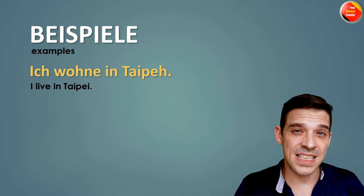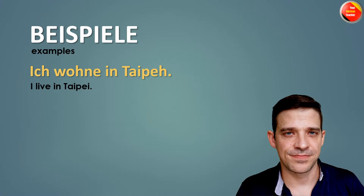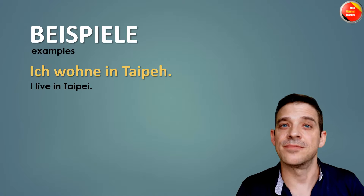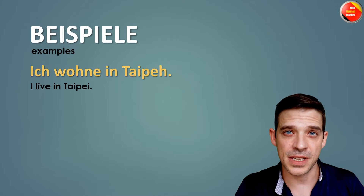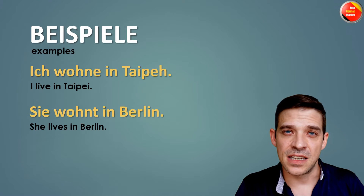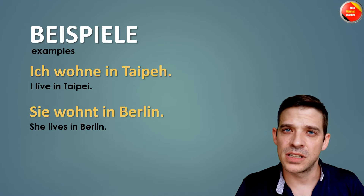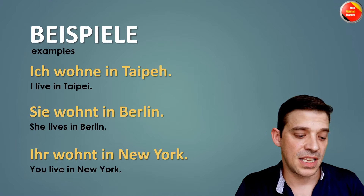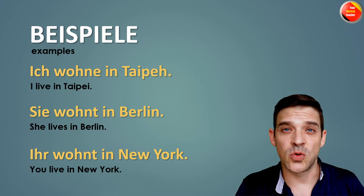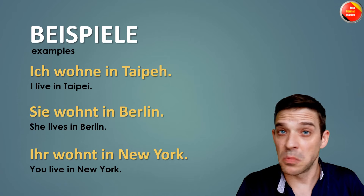Beispiele — Examples. Ich wohne in Taipei. I live in Taipei. At the moment I live in Taipei. Sie wohnt in Berlin. She lives in Berlin. Ihr wohnt in New York. You guys live in New York — maybe!